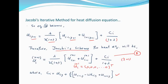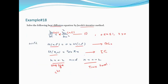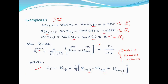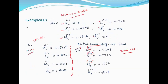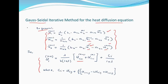Jacobi में n था, Gauss-Seidel वाले में n+1 आएगा — यह c_i में difference है। इसको note करें। अब वापस topic की तरफ चलते हैं और इसको numerically solve करेंगे।